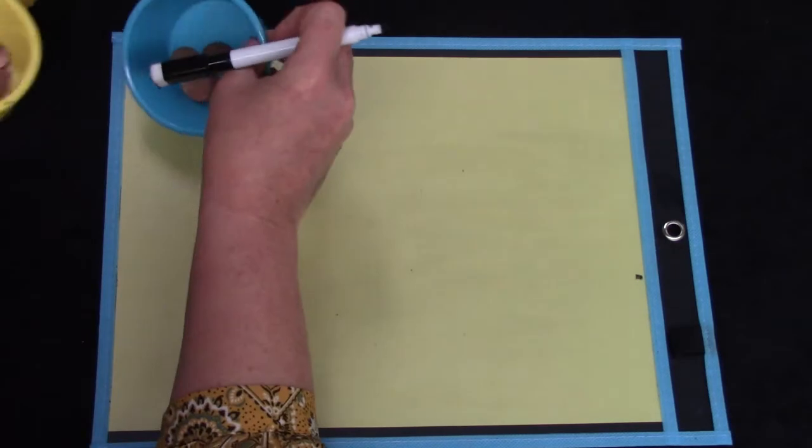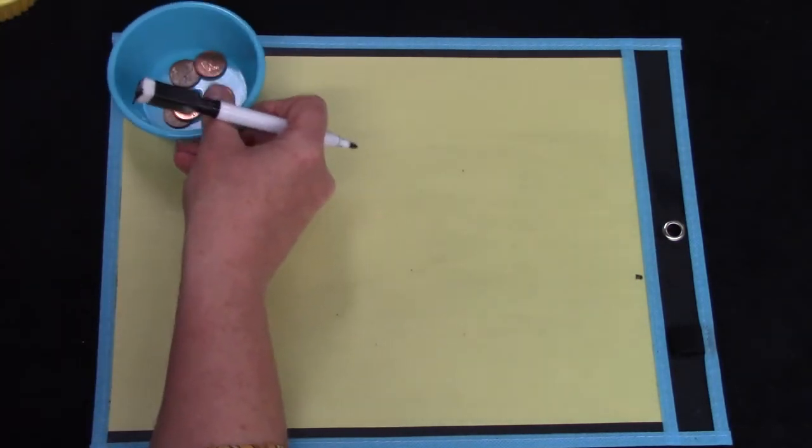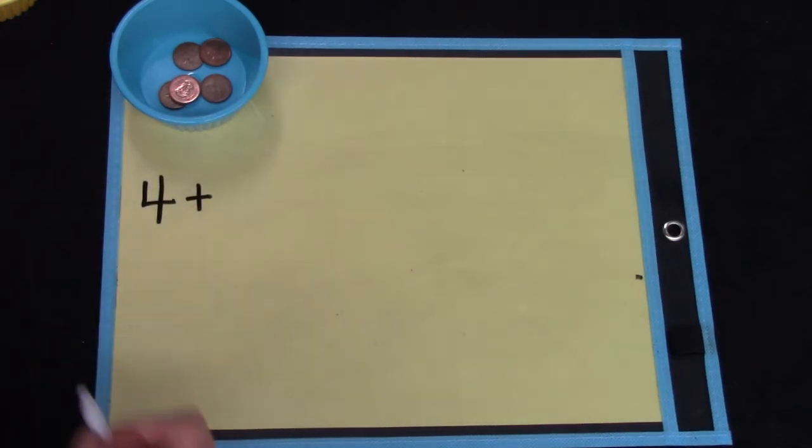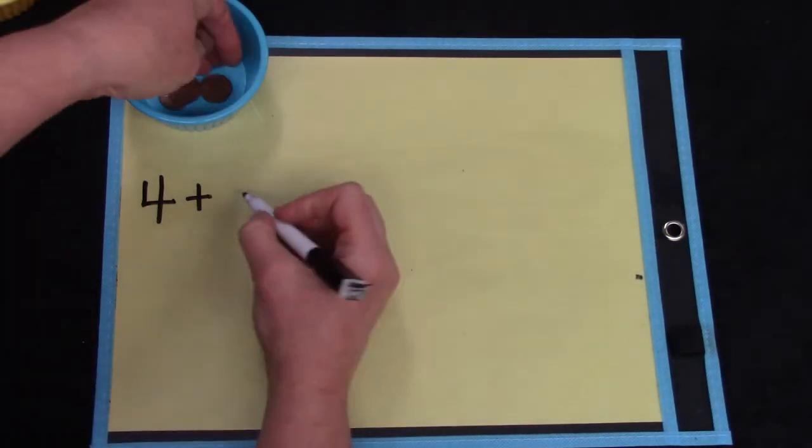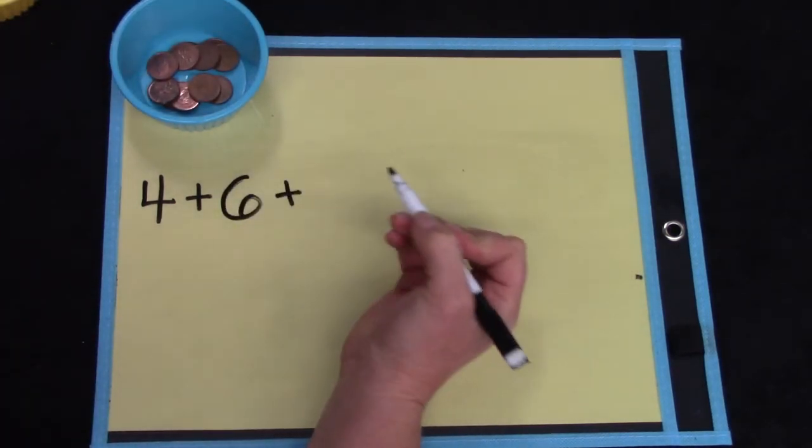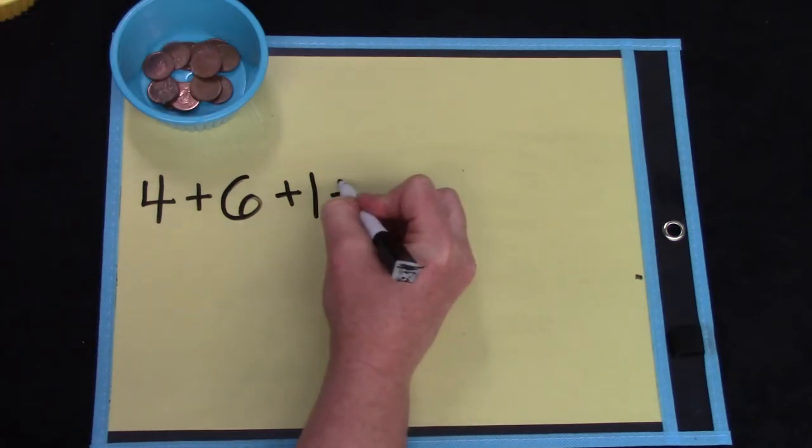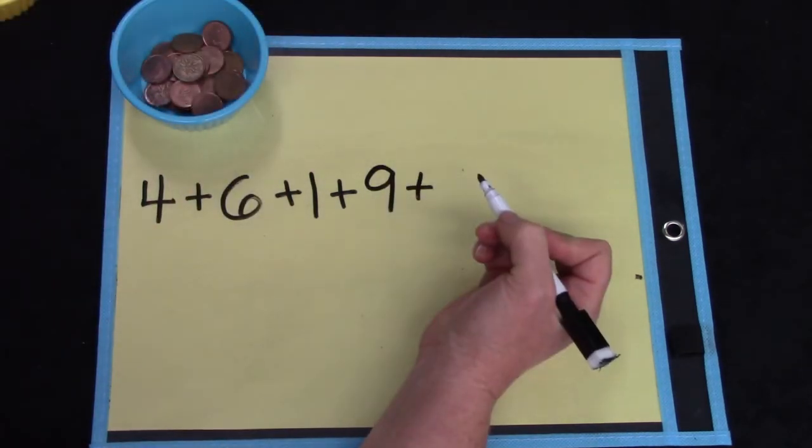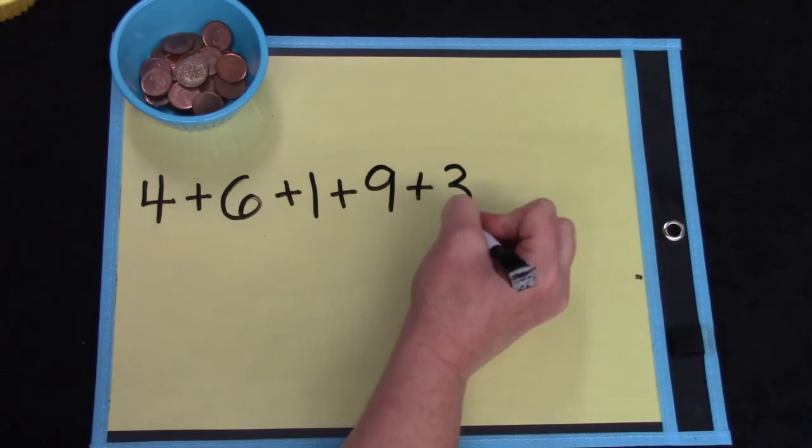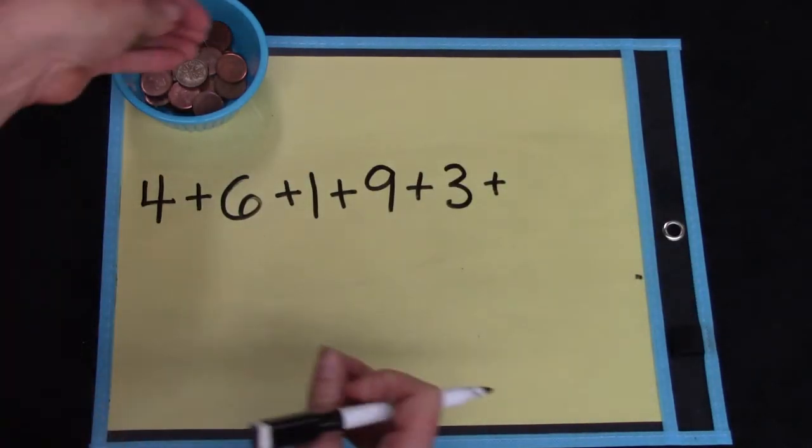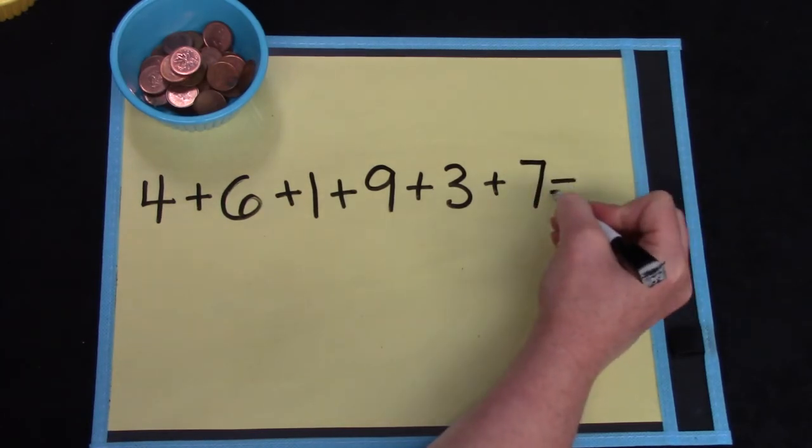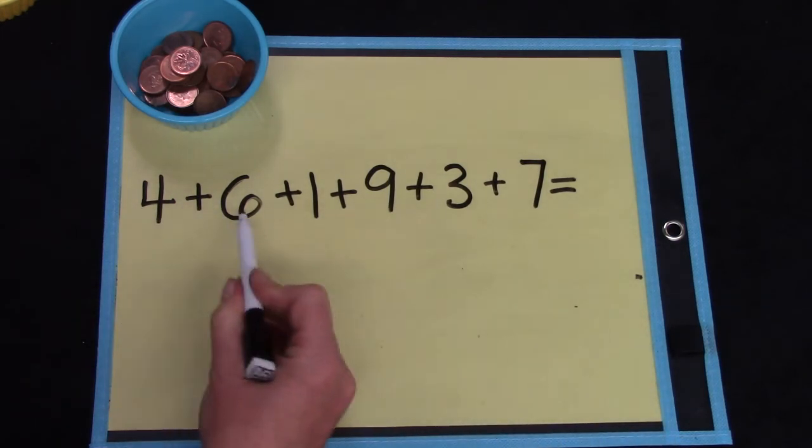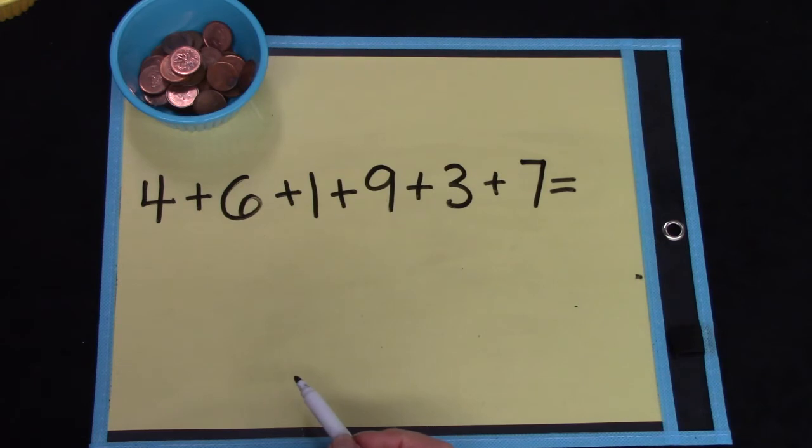Well, what if I kept adding numbers to my little cup? If I have four pennies, plus six pennies, plus one penny, plus nine pennies, plus three, plus seven. That is so many numbers! We're going to look at these numbers and see if we can find any numbers that go together. Can you see any?